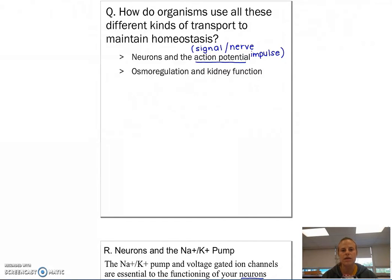Hi guys, Ms. Francis here. Today I would like to discuss neurons with you. We just finished up our unit about transport. We talked about passive transport, active transport. So how do organisms use all those different types of transport to maintain homeostasis?